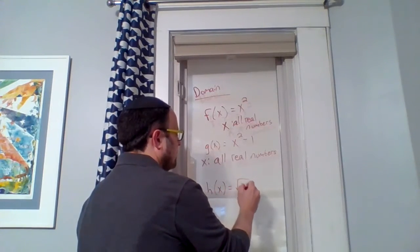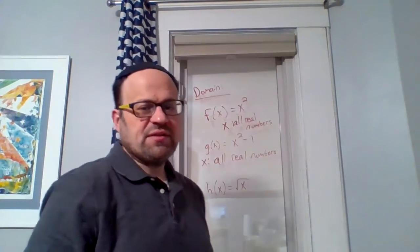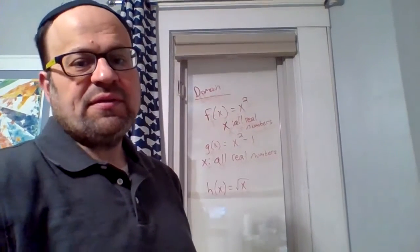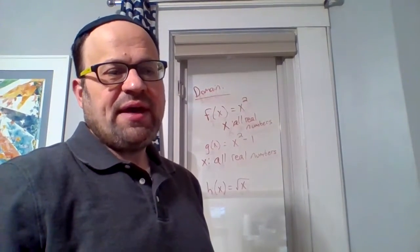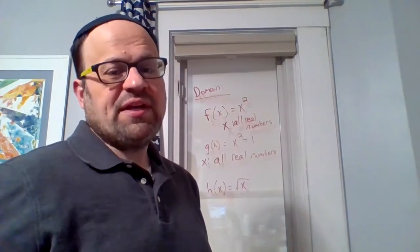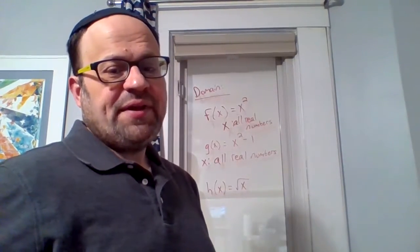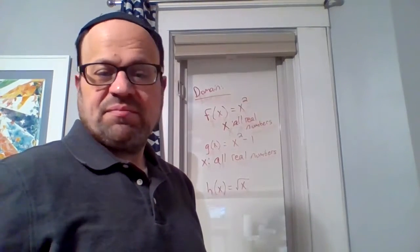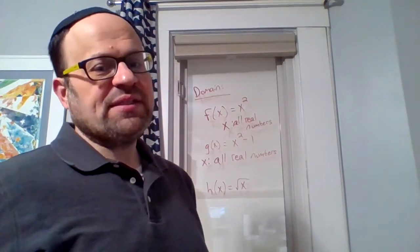What about the square root of x? Now, can x be zero? Sure, we can have the square root of zero. x can be positive numbers, no problem, but x cannot be negative.